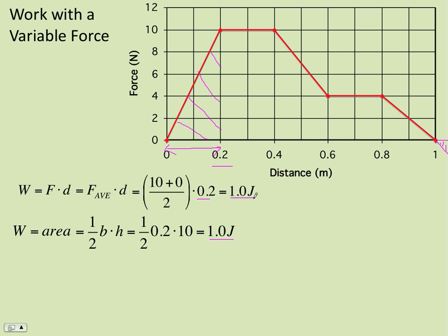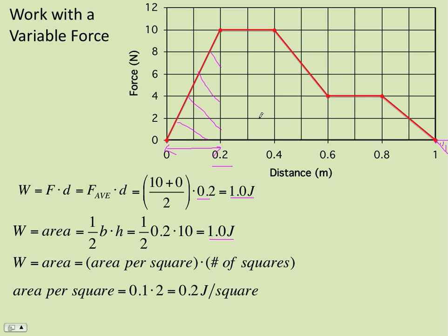Another way to do work by area is to figure out the area of one of these squares on the graph. So if the graph is a grid, you can figure out the area per square and then multiply by the number of squares. In this problem, if you look, just pick any square. It's got a height of 2 newtons and a width of 0.1.